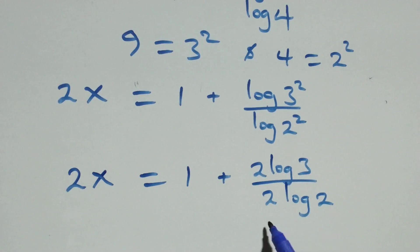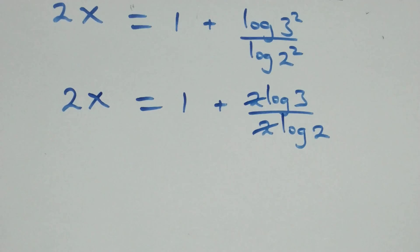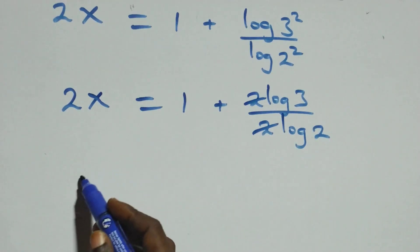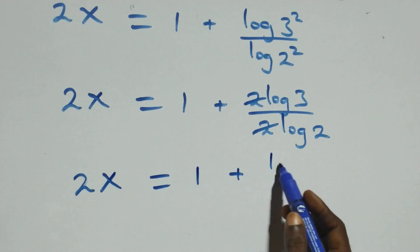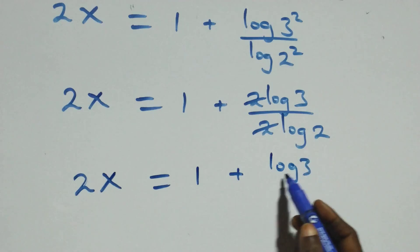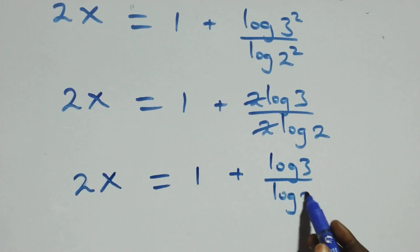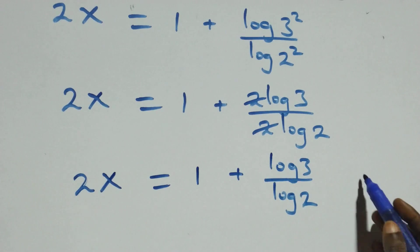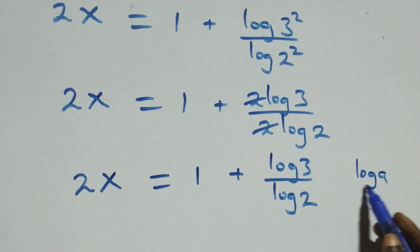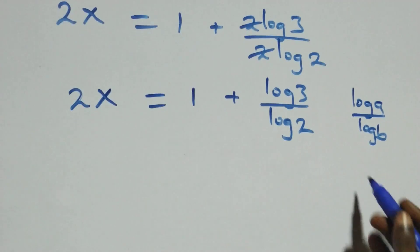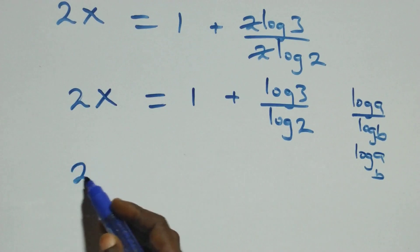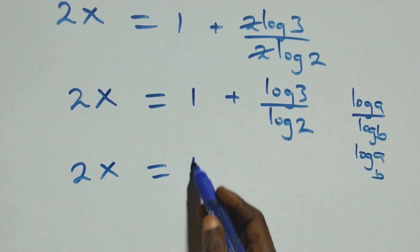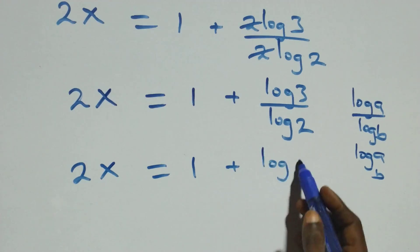At this point, the 2s cancel each other, and we have log 3 over log 2. So 2x now equals to 1 plus log 3 over log 2. Then here we also apply the change of base formula: when we have log a over log b, this is the same thing as log a to base b. So what we have becomes 2x equals to 1 plus log 3 base 2.